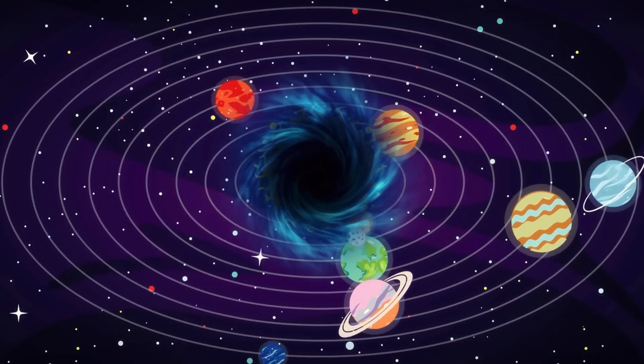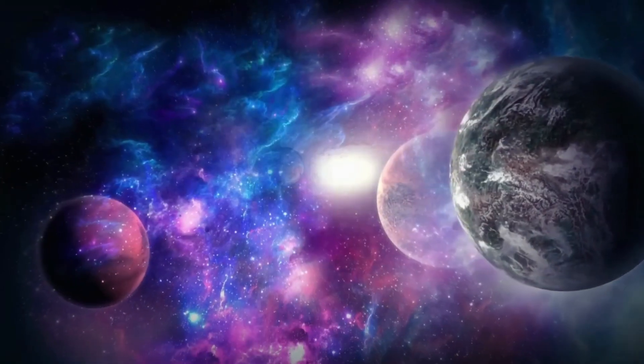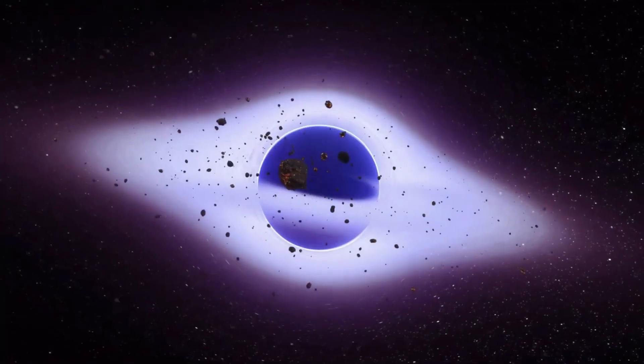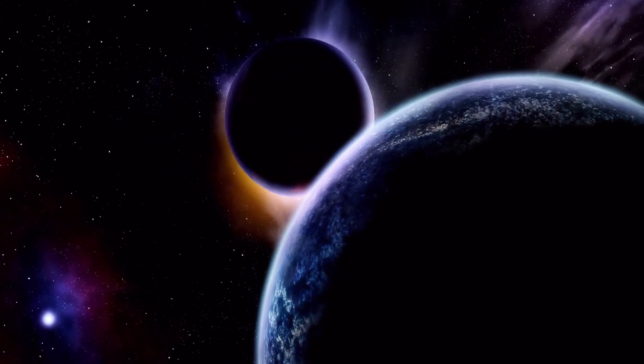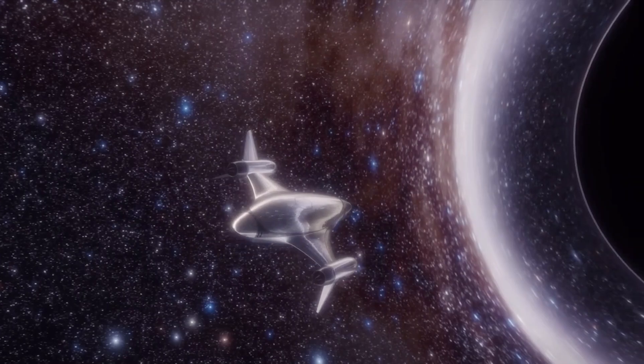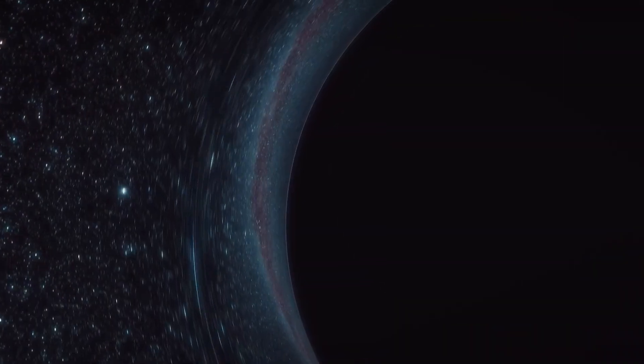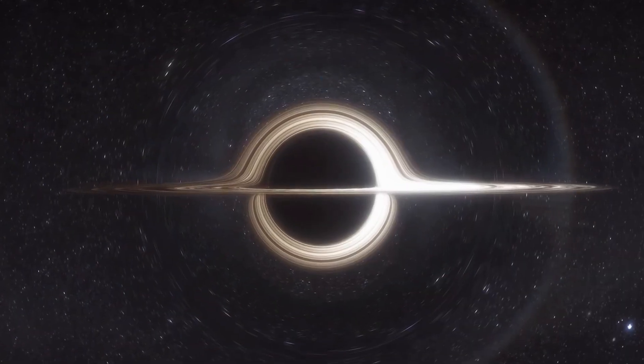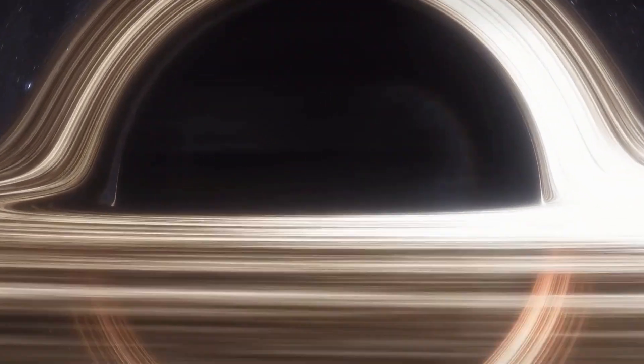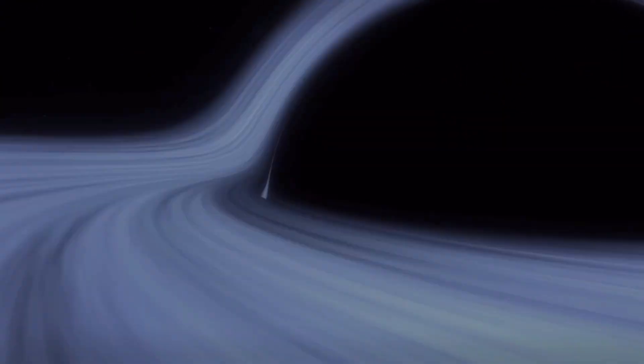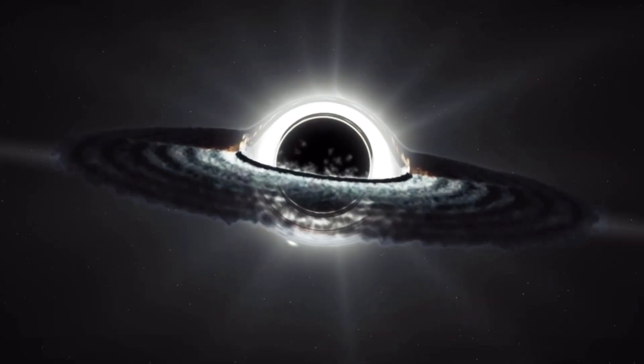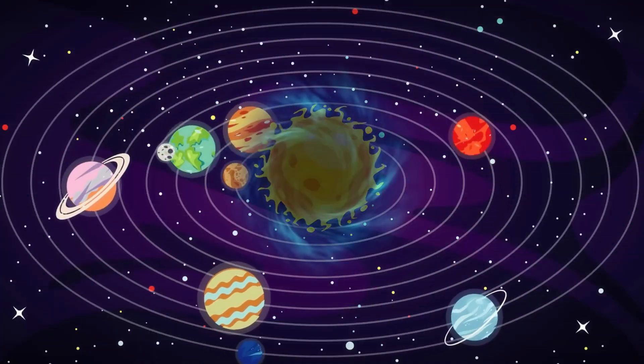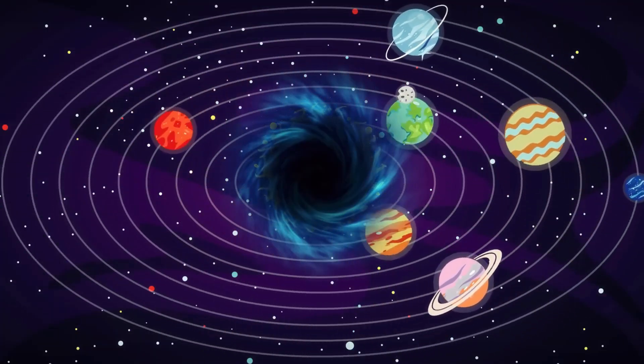According to Einstein's theory of general relativity, black holes create what's known as gravitational time dilation. This means that time slows down near a black hole compared to farther away. If you were close to a black hole, you'd experience time passing much more slowly relative to someone far from it. It's like living in a time machine where seconds can stretch into years. This warping of space-time has profound implications for our understanding of the universe, potentially allowing for phenomena such as time travel or alternate dimensions.